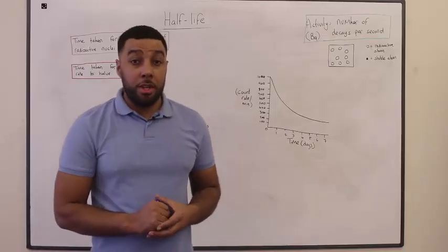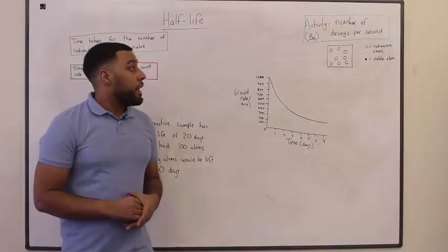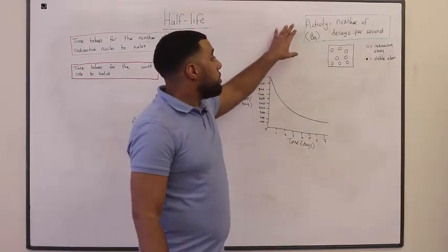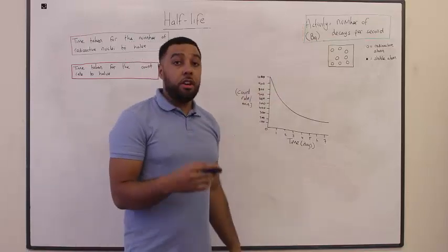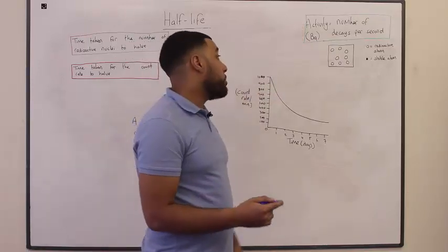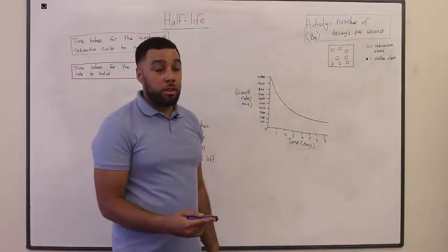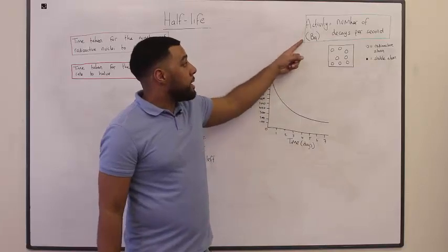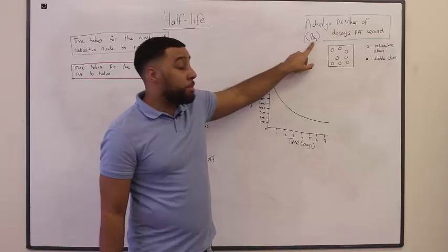Hi guys, welcome to another video. Today we're going to be looking at half-life. I want to introduce you guys to a new term which we call activity. The activity of a radioactive sample is the number of decays that happen per second. Activity is measured in a unit called becquerel, or quite simply, just BQ.